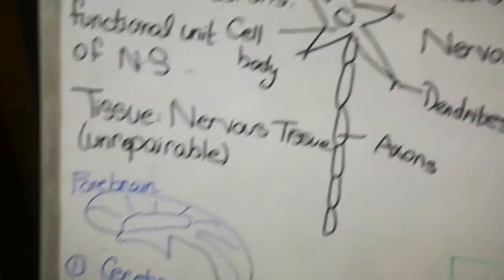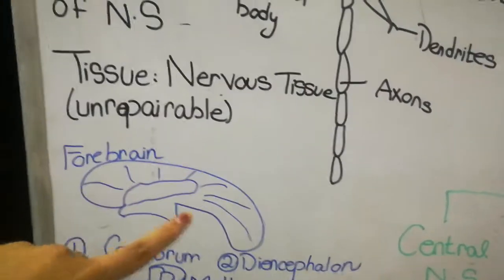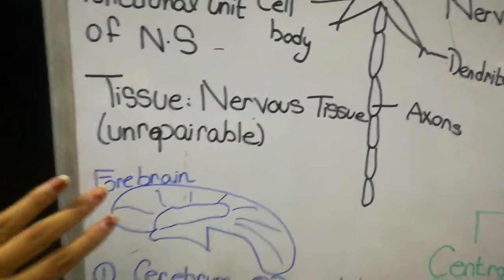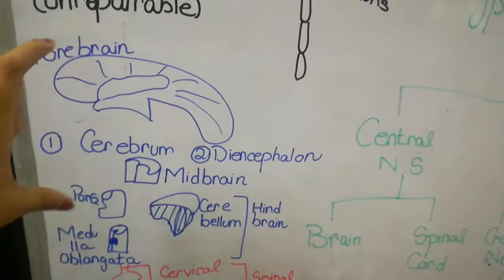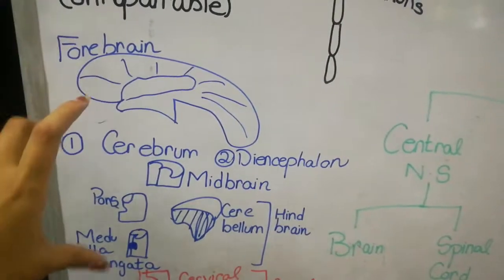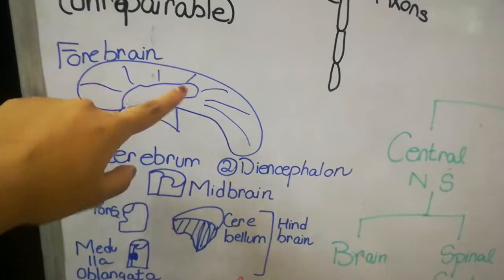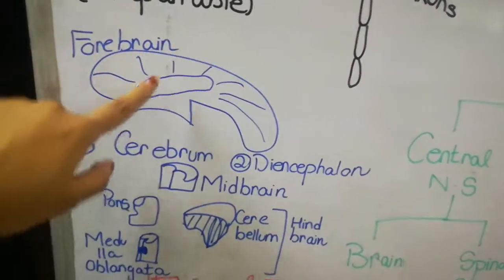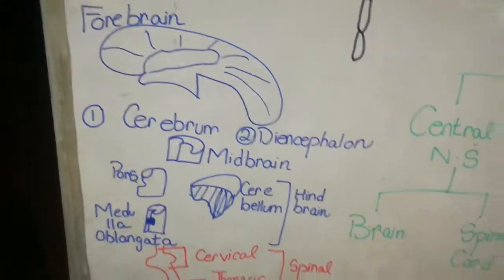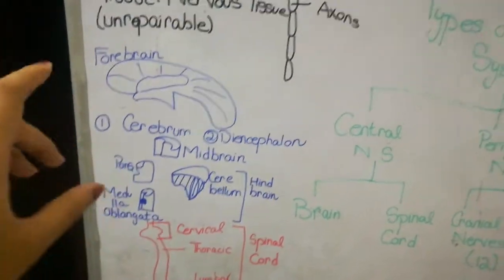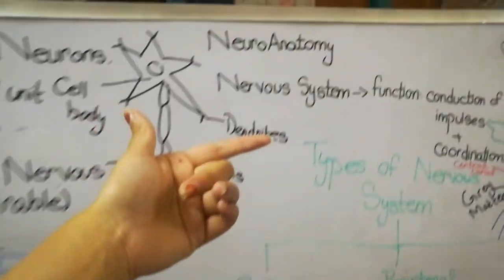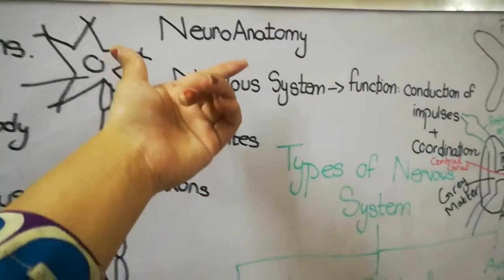This is the brain and the spinal cord. So neuroanatomy is the study of structure and location of neurons in different parts of the brain and spinal cord. That branch of anatomy is called neuroanatomy.